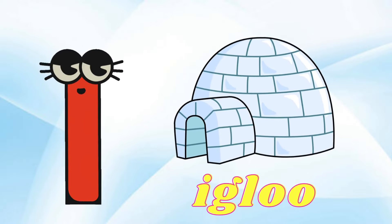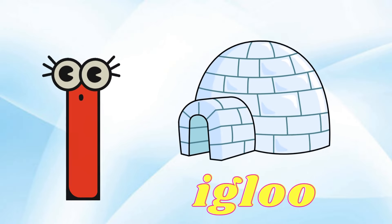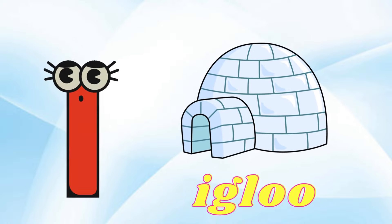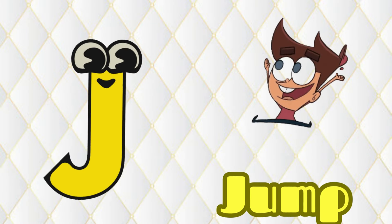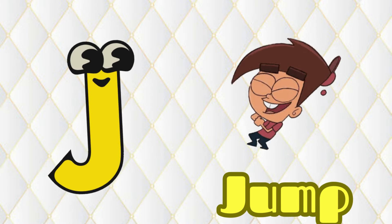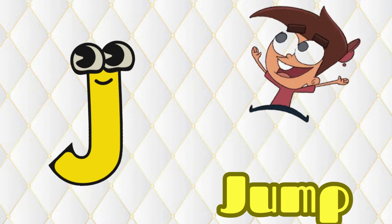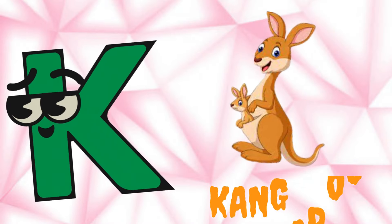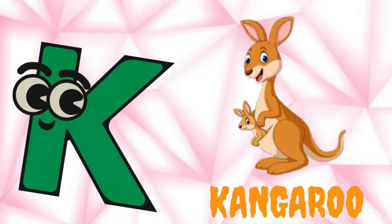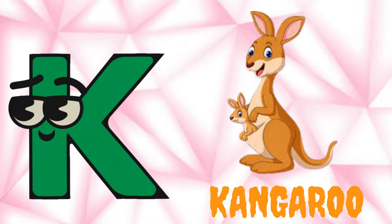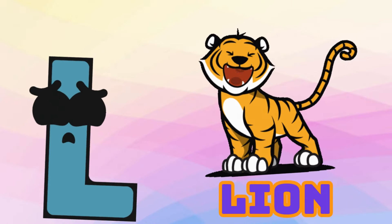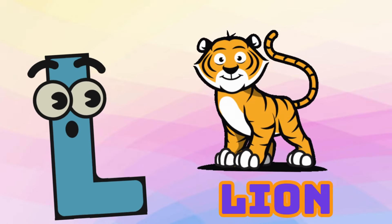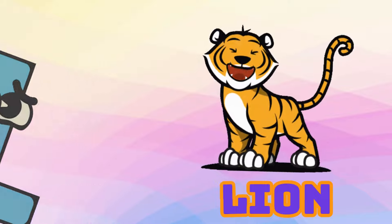I is for Igloo, I-I-Igloo. J is for Jump, J-J-Jump. K is for Kangaroo, K-K-Kangaroo. L is for Lion, L-L-Lion.